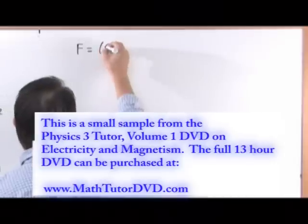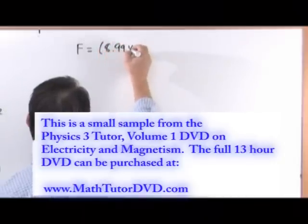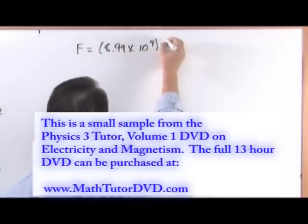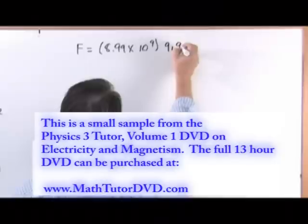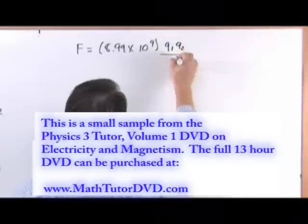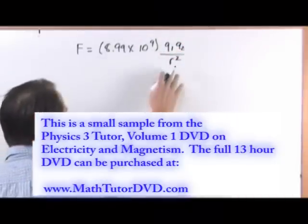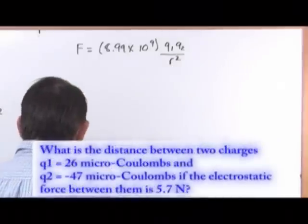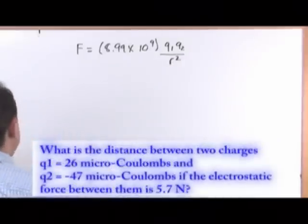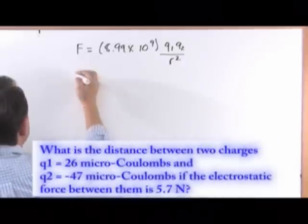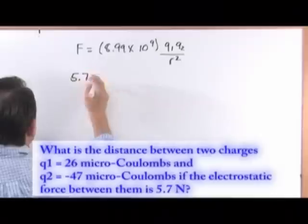Same thing again, it's 8.99 times 10 to the 9 times Q1 times Q2 over R squared. And this guy says, what is the distance between two charges? So we're going to be calculating R if the electrostatic force is 5.7 newtons. So the force between them is 5.7 newtons.